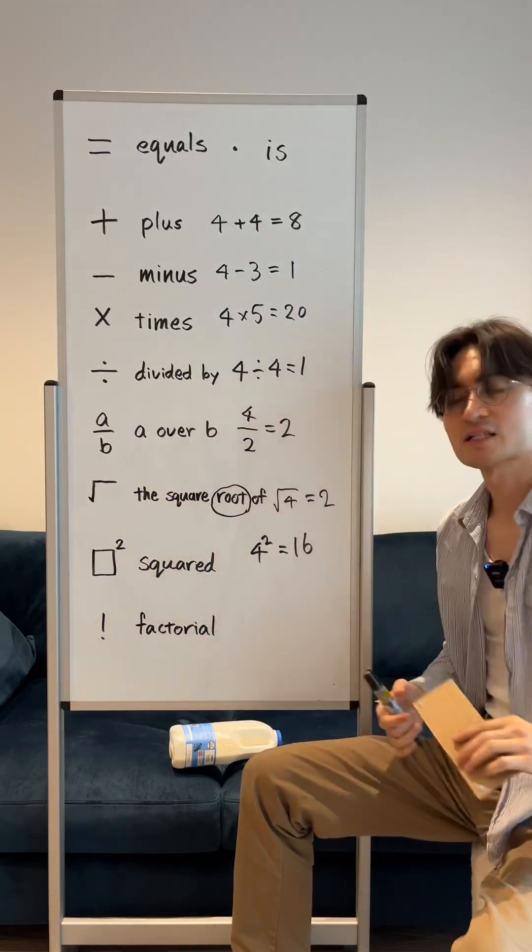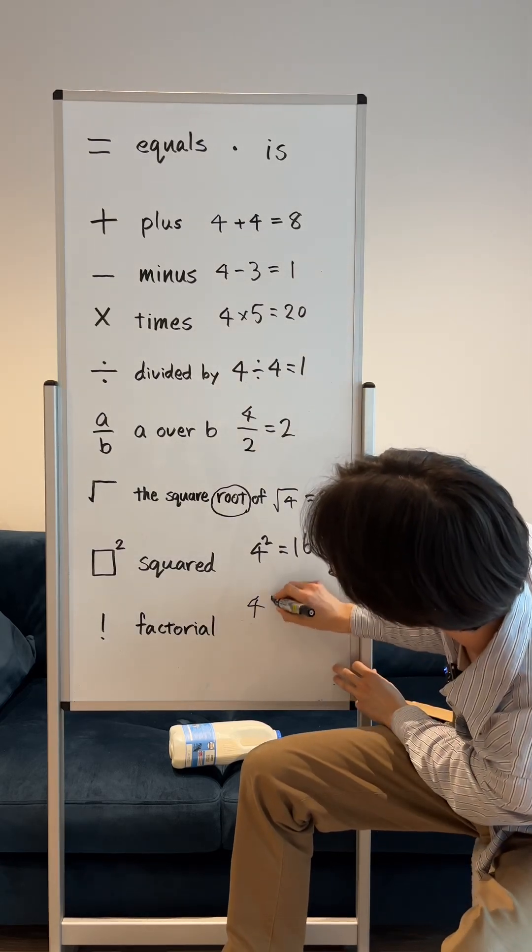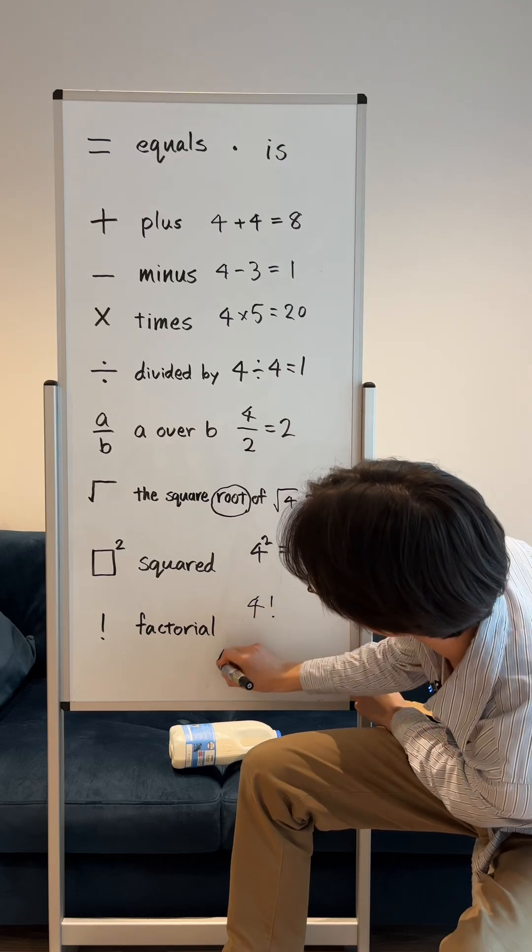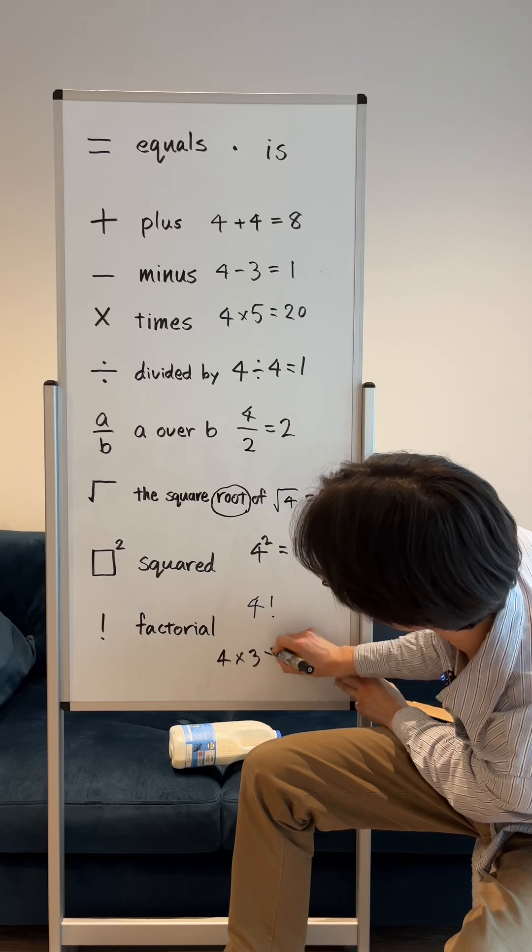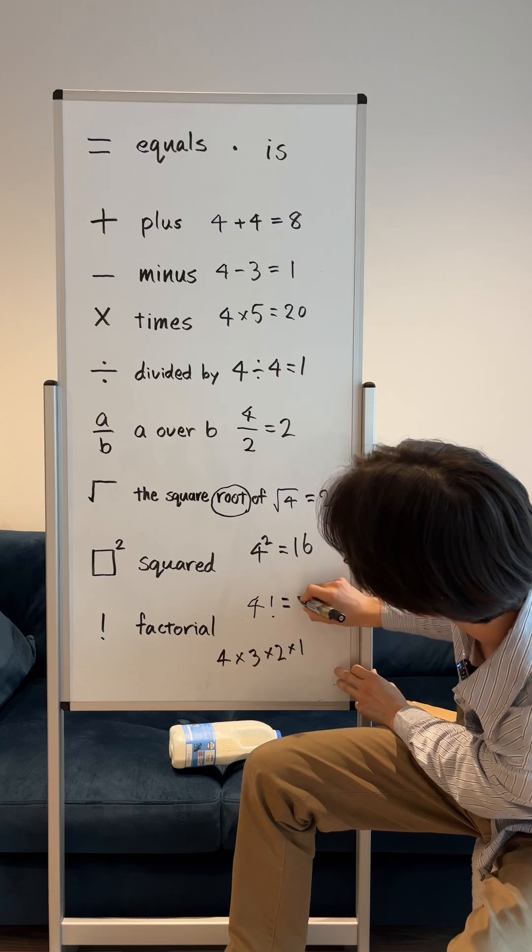This, a factorial. So 4 factorial, which means 4 times 3 times 2 times 1 is 24.